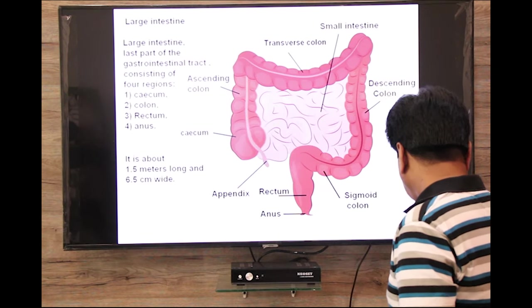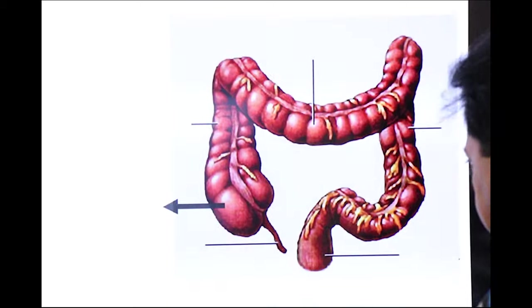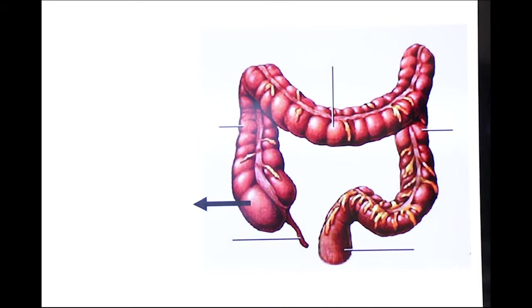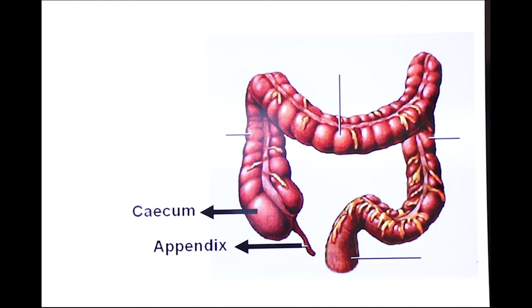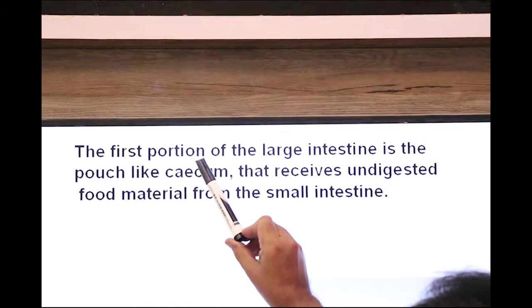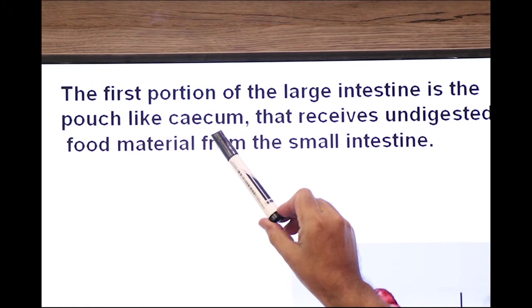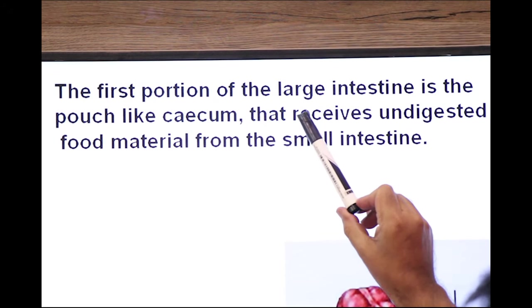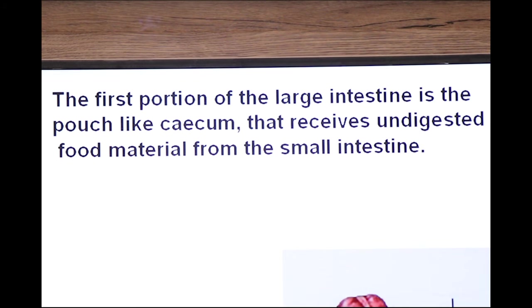Now the first part of the large intestine is the cecum part and it is connected to a tube known as appendix, vermiform appendix. Now what is cecum? The first portion of the large intestine is the pouch like cecum that receives undigested food material from the small intestine.